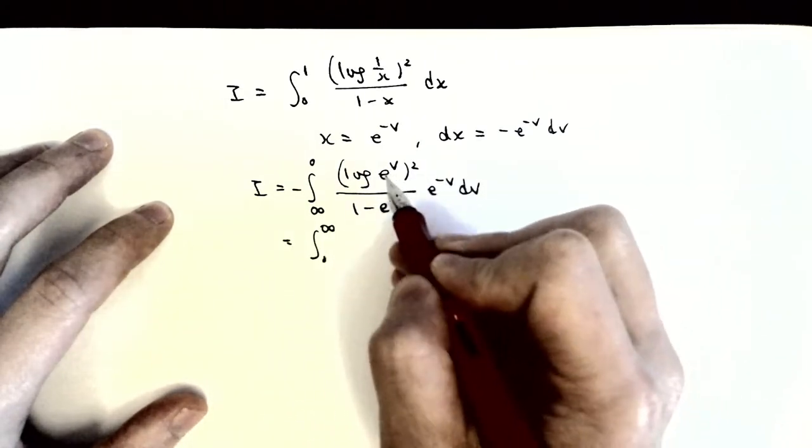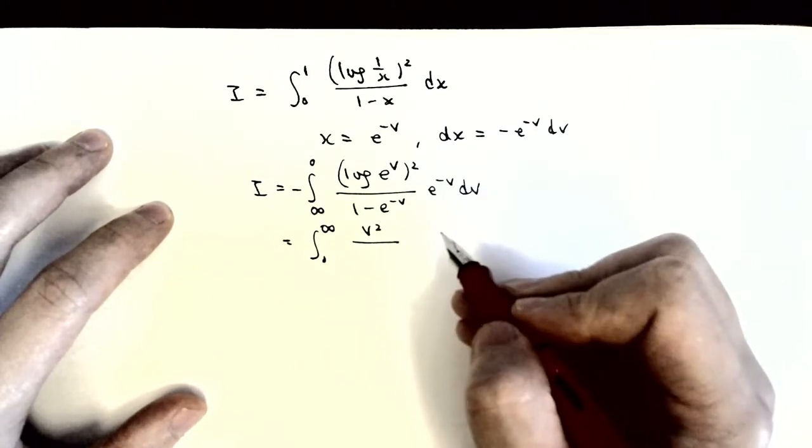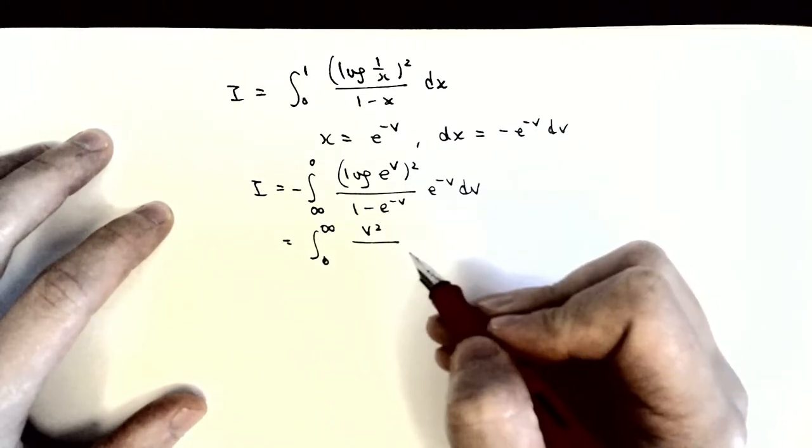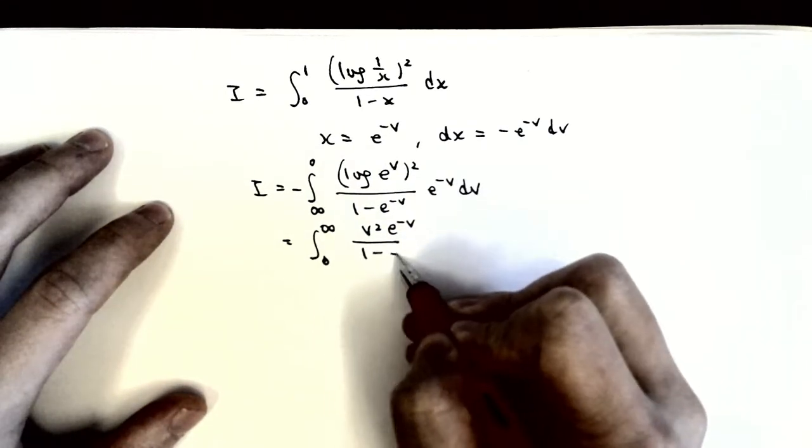And then, after the cleanup, we will have v squared times e to the minus v over 1 minus e to the minus v, dv.